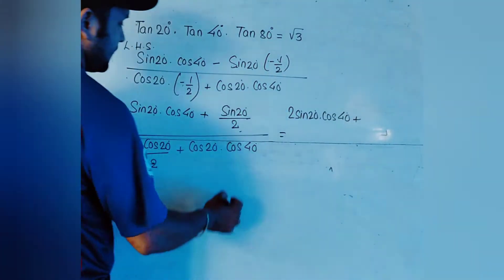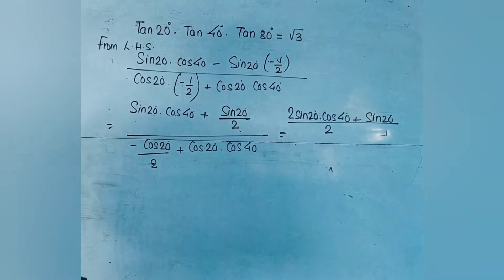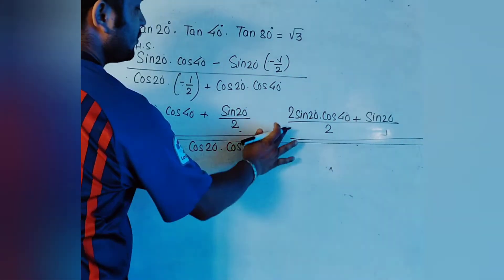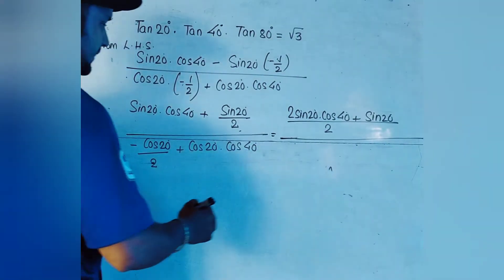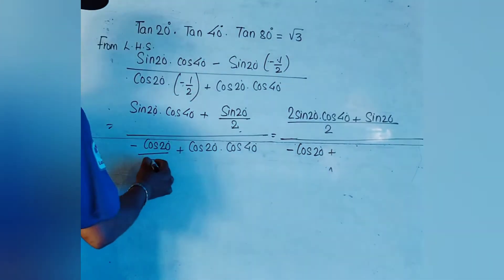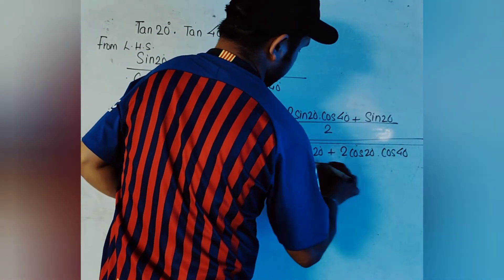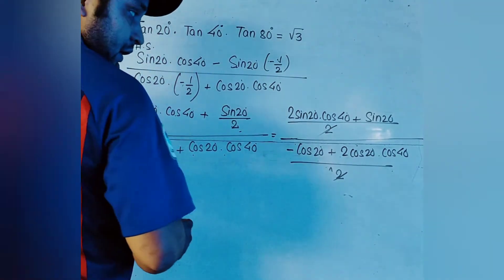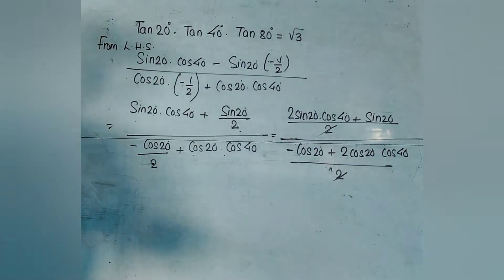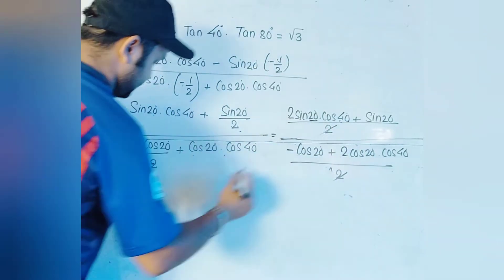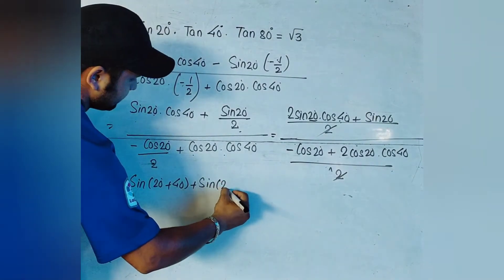In the denominator similarly, after substituting cos120° = −1/2, we get −cos20° + 2cos20° × cos40°, over 2. The 2s cancel. For the numerator term 2sin20° × cos40°, we use the formula 2sinAcosB = sin(A + B) + sin(A − B).